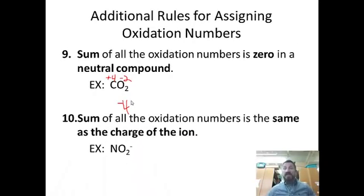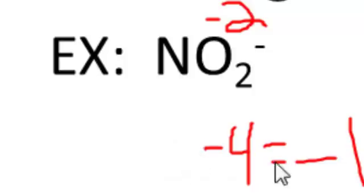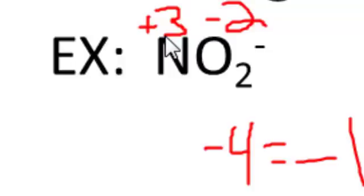Rule ten: the sum of the oxidation numbers equals the charge of a polyatomic ion. For example, in NO₂⁻, oxygen is negative two and there are two oxygens, contributing negative four. The overall charge must be negative one, so nitrogen plus negative four equals negative one, meaning nitrogen has an oxidation state of plus three.